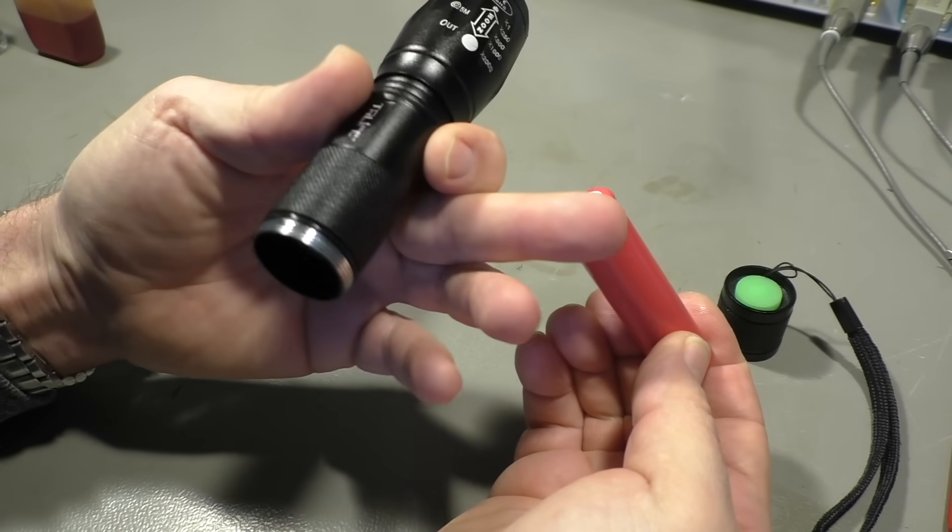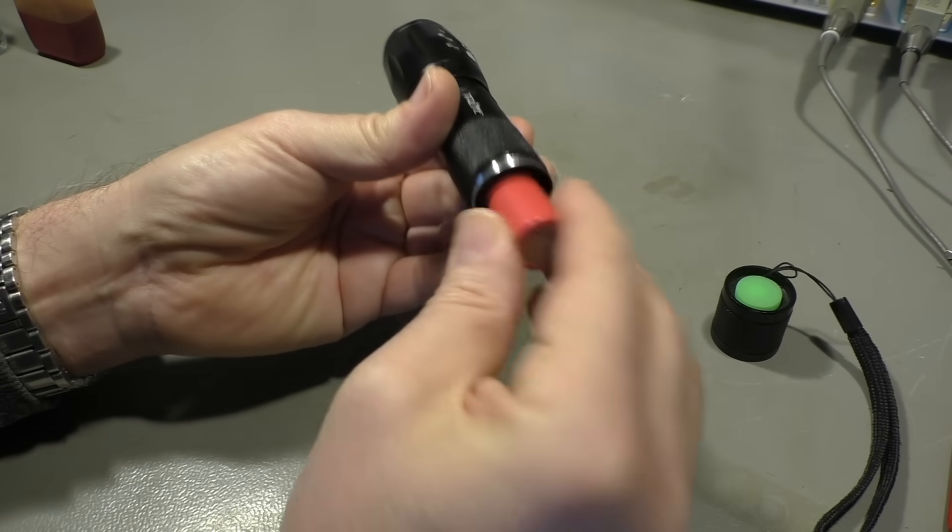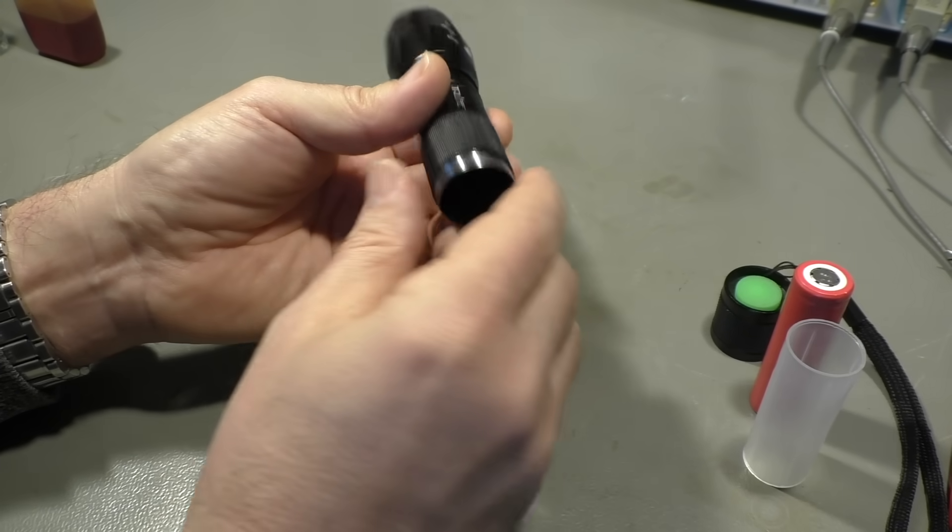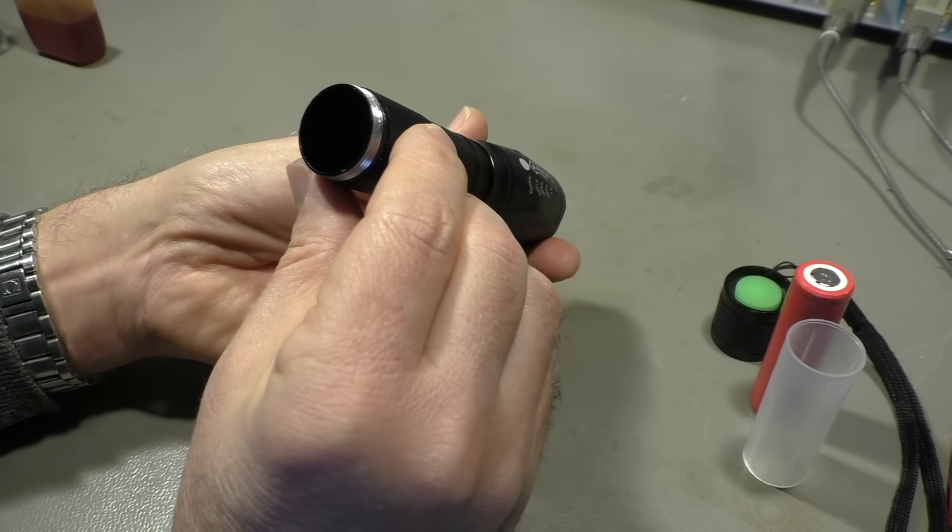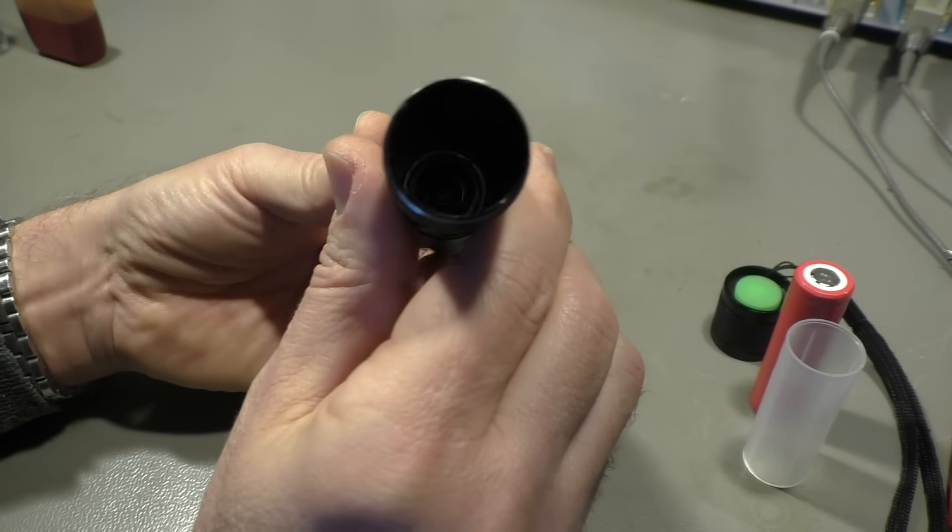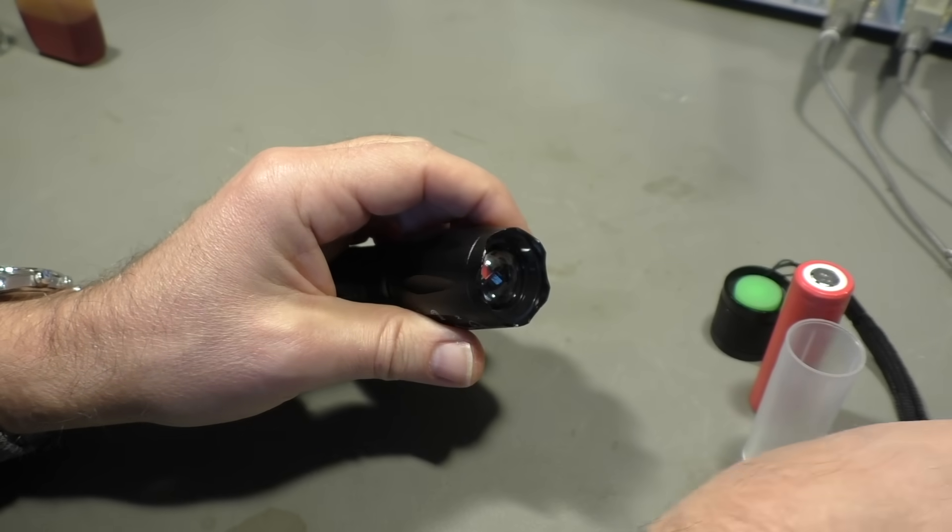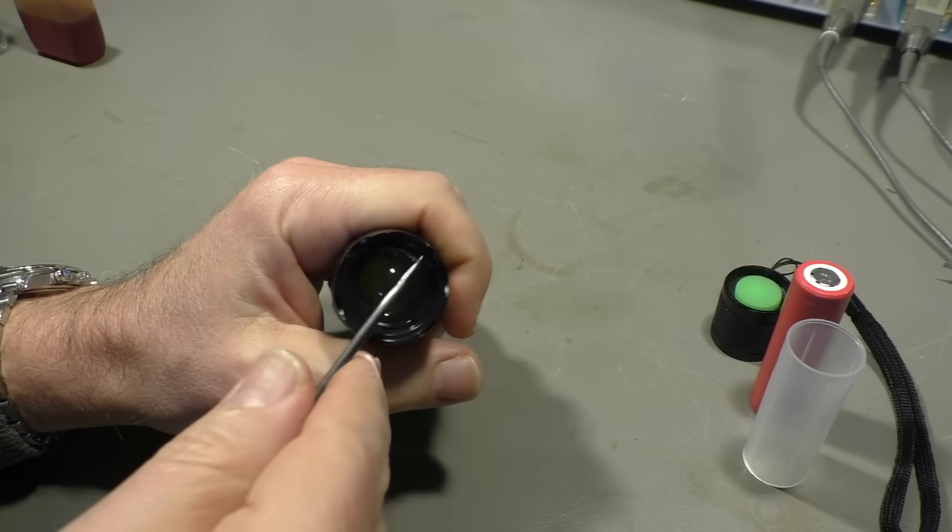The first step is of course to remove the battery. It goes in with the positive forward. Need to remember that. There is a plastic tube and inside there is a spring contact.